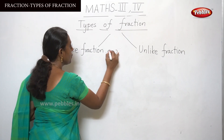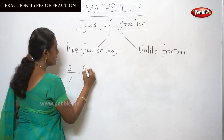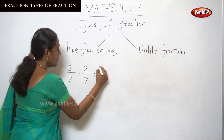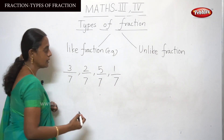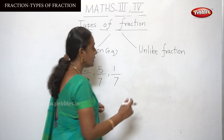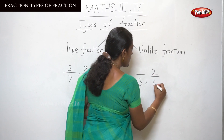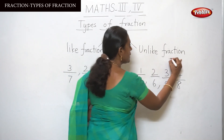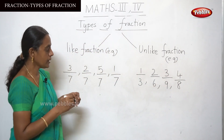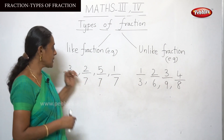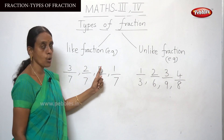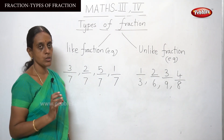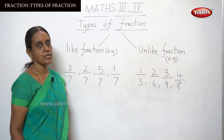For like fraction, here are examples: 3 by 7, 2 by 7, 5 by 7, and 1 by 7. Observe these fractions — the numerators vary in number, but all the denominators are the same, which is 7. When all the denominators are the same, that is called a like fraction.